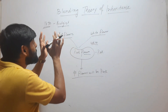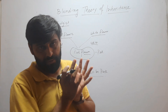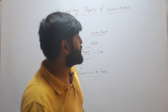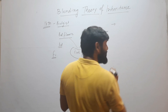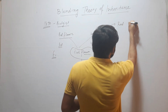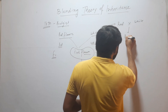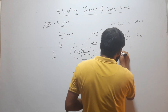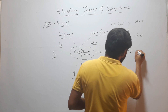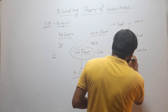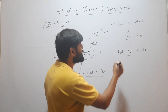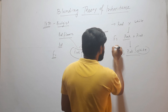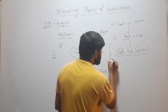And the traits that are mixed together will never separate again, according to this theory. But later on, this theory was discarded. Why? Because in reality, when we cross red and white flower plants we get pink, but when we cross pink with pink, we get red, pink, and also white. So this theory could not explain how the traits red and white, which disappeared in F1 generation, appeared again in F2 generation.